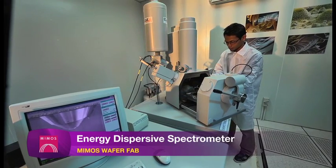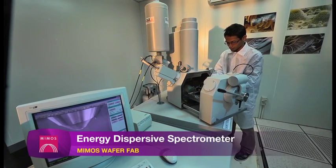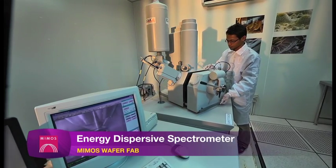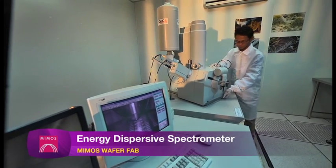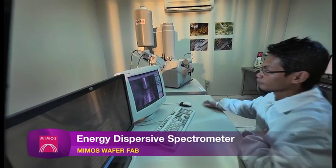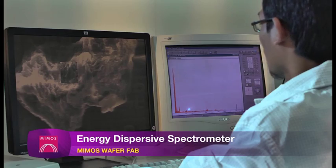Energy dispersive spectrometer is an analytical technique used for the elemental analysis or chemical characterization of a sample. It is a technique for identifying and quantifying elemental composition of a sample with an area as small as a few cubic micrometers.